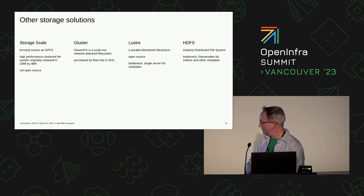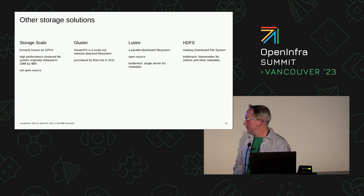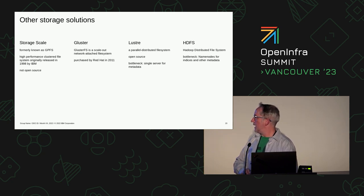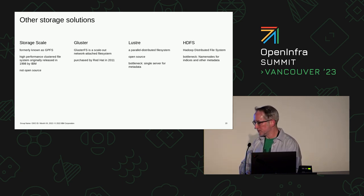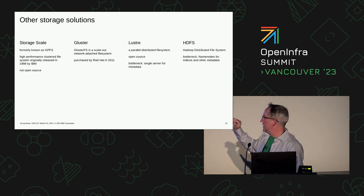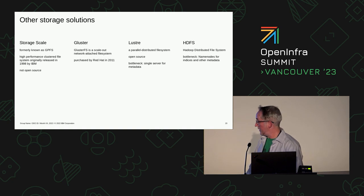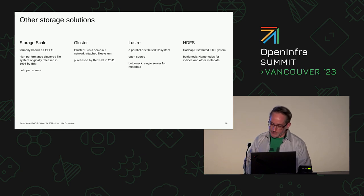Gluster was bought by Red Hat in 2011. Out of the box it's just a file system, but there are supposedly plugins that will let you get some kind of block access to Gluster. Lustre and HDFS both have bottleneck problems: like I was telling you about how Rados and CRUSH get to calculate where storage should be, these systems try to keep a master list of where all the data is on a single server — single point of failure, never a great idea — or have more than one name node. It's obviously a lot more robust when every single node knows where the data goes in a system.